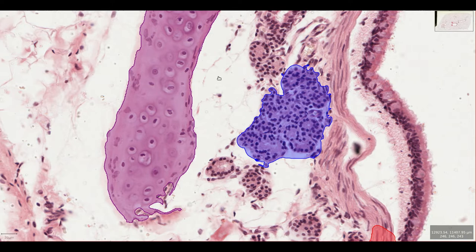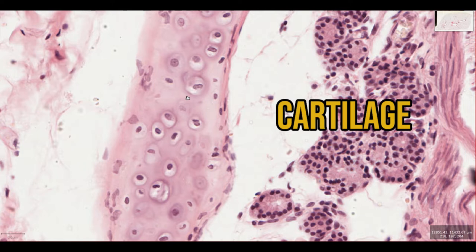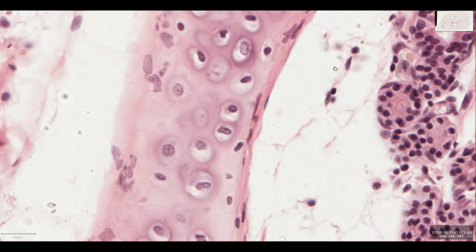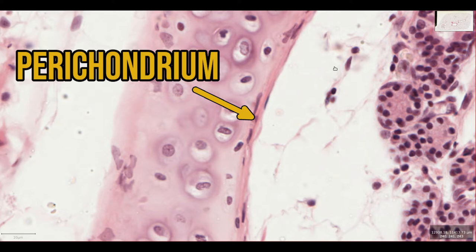Finally there are islands of cartilage to give mechanical support to the bronchus. You can see chondrocytes within lacunae and cartilaginous matrix surrounding them. Each island of cartilage has a thin coating layer of connective tissue with some fibrocyte-like cells. This is the perichondrium, and these cells are able to develop into chondroblasts that replace the mature chondrocytes when they die.